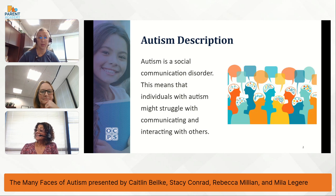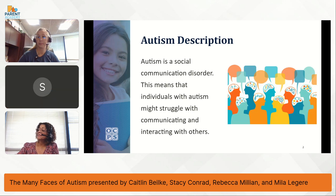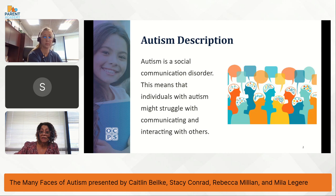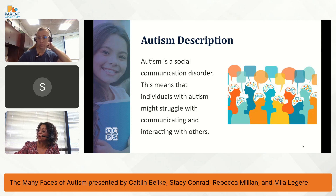El autismo es el término más común para lo que conocemos como el espectro del autismo. Según los criterios del DSM-5 y el Centro de Control y Prevención de enfermedades, el autismo es un trastorno de comunicación social. Las personas con autismo pueden tener dificultades para comunicarse o interactuar con los demás.